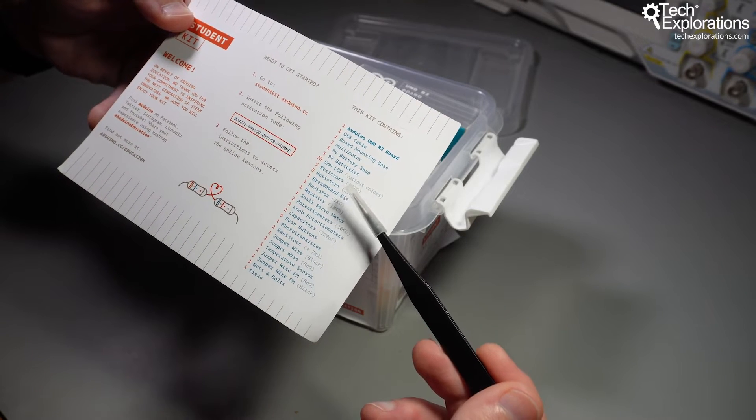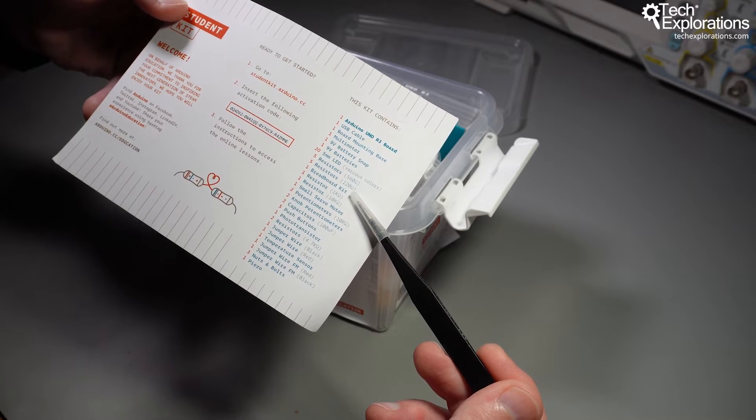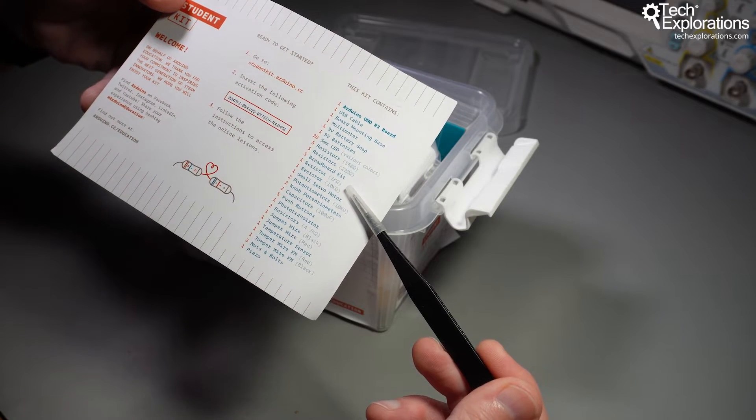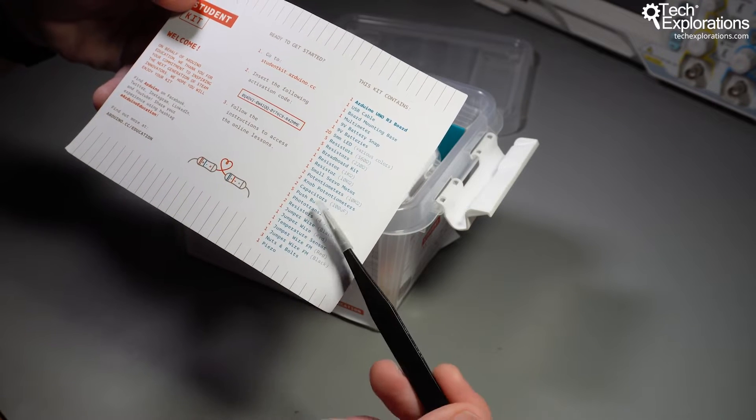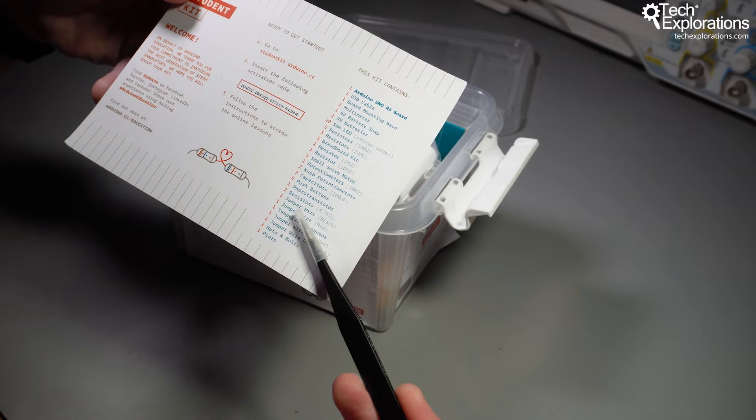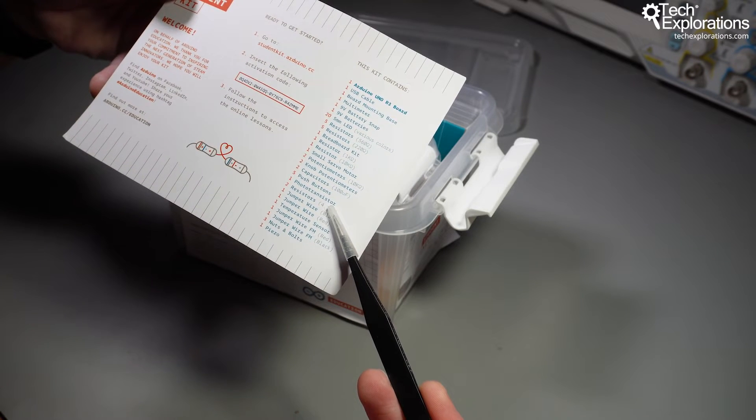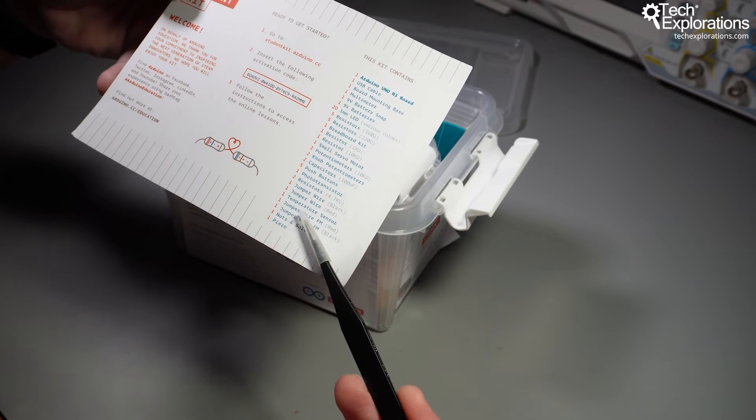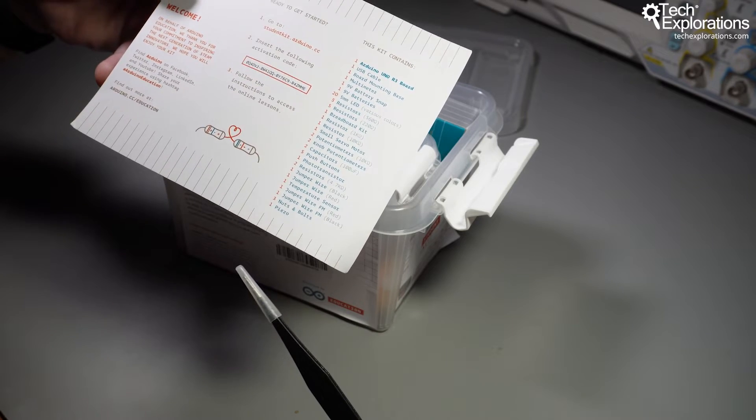There's lots of LEDs, assorted resistors, there's a breadboard kit so you can assemble simple circuits on the breadboard. A servo motor, potentiometers, capacitors, buttons. There's a photo transistor here that allows you to measure light intensity, lots of jumper wires, temperature sensor, nuts and bolts and a piezo buzzer as well.